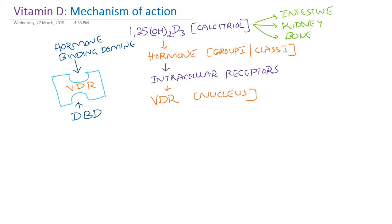Since the vitamin D receptor is a protein, its gene is located on chromosome 12, and it is made up of 427 amino acids. When vitamin D binds to this receptor, it acts as a transcription factor and regulates gene expression. The mechanism of action of calcitriol is mediated by this vitamin D receptor, which is a protein with 427 amino acids and 2 domains.